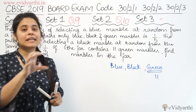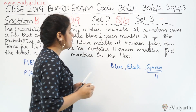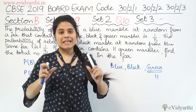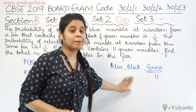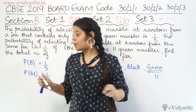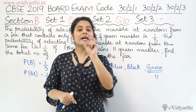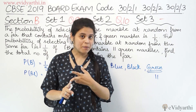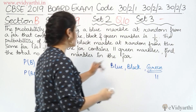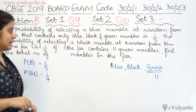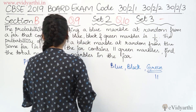Now, if the jar contains 11 green marbles, we need to find the total number of marbles. The two given probabilities are for blue and black. We will now find the green marble probability. Since there are only three colors, if we add the two given probabilities, we can find the remaining.